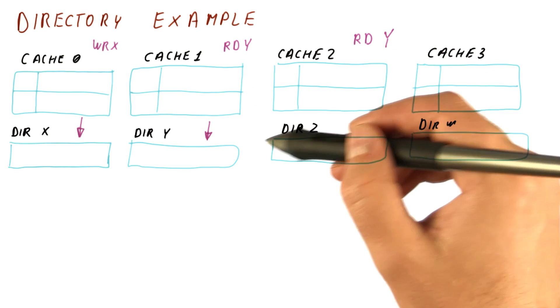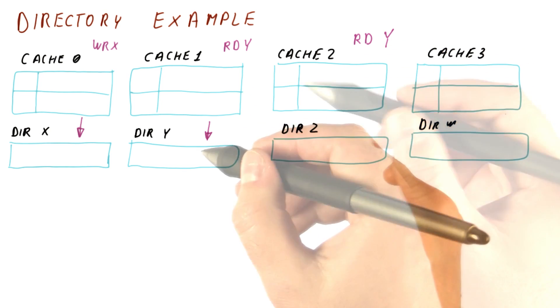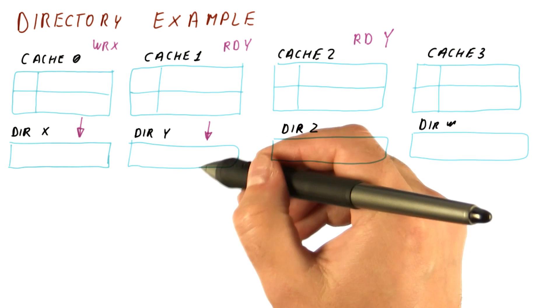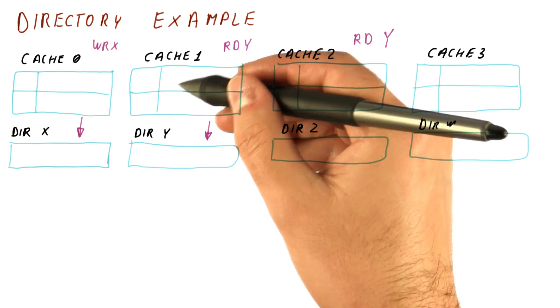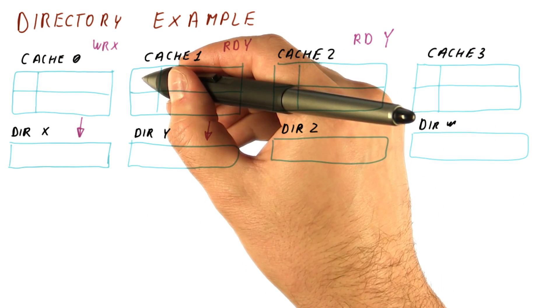Meanwhile, the read y is traveling through the network to this directory. In each of these directories, we see that the block is not present in any of the caches, so we allow exclusive access for the read.